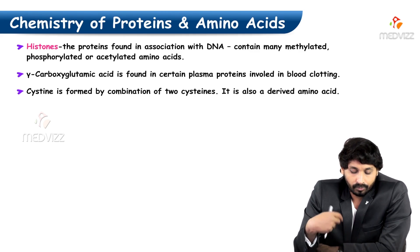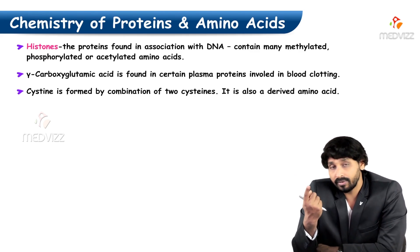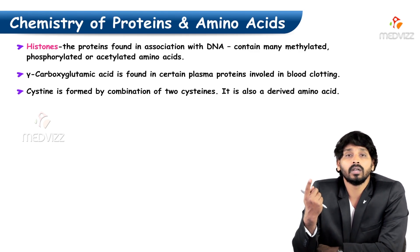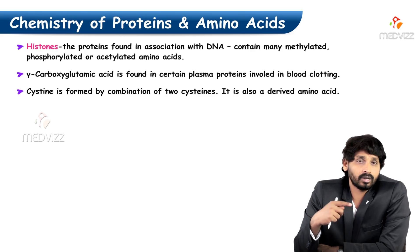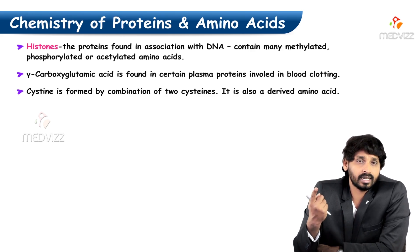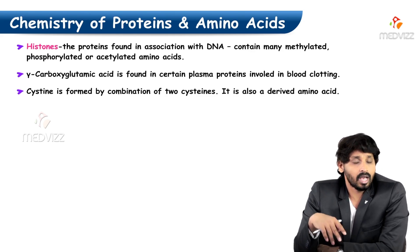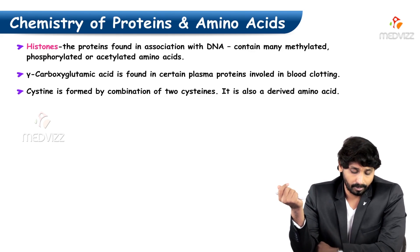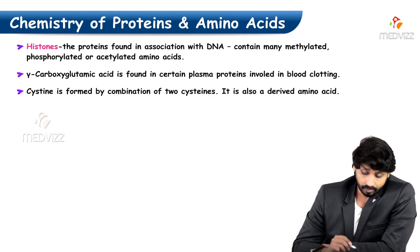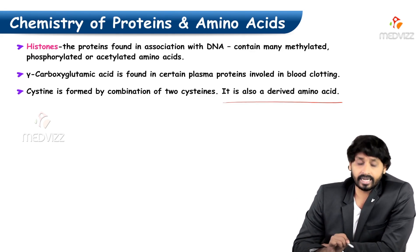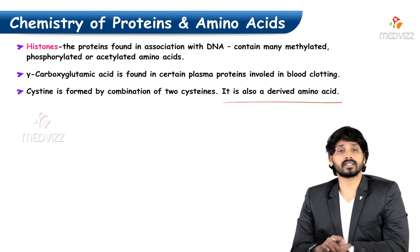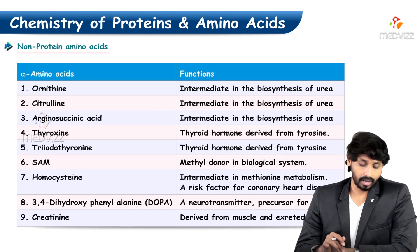Cystine is formed by the combination of 2 cysteines. As mentioned in the classification of amino acids under sulfur-containing amino acids, cysteine and cystine are different — explained in a previous video. Cystine is also a derived amino acid.